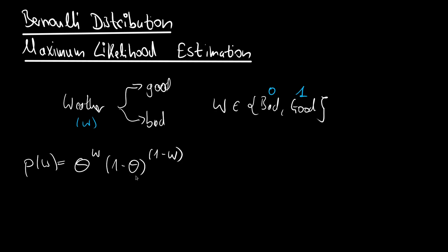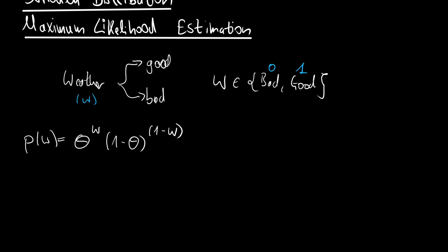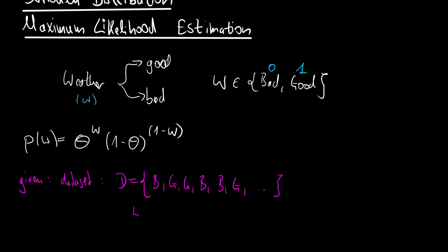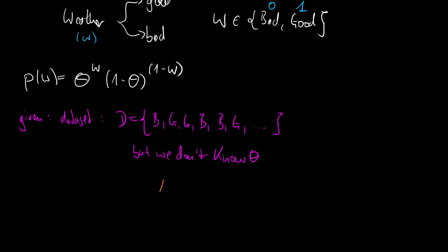The question now is that we have a data set but we don't know theta. So let's say we are given a data set d, and for example we observe bad, good, good, bad, bad, bad, good, and so on. But we don't know theta — we don't know with which probability good weather appears. But we have a sequence of observations. And here is where our maximum likelihood estimation comes in.